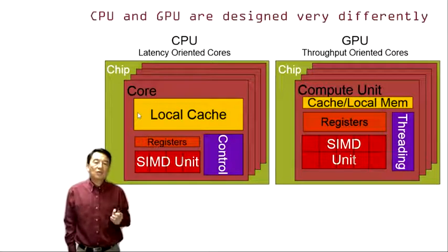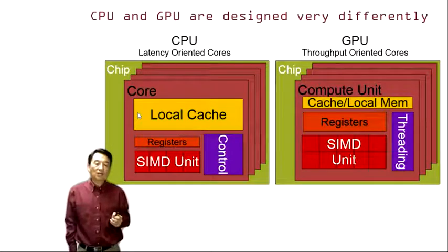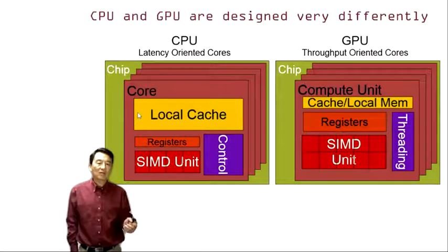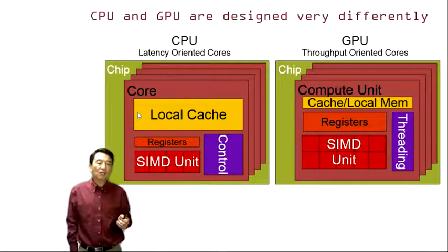CPUs tend to have sophisticated control logic, represented by a large purple block labeled as control. Whereas GPUs tend to have very simple control but a large number of threads to manage, shown by a purple block on the right-hand side that represents a large amount of logic to manage, schedule, and handle threads.